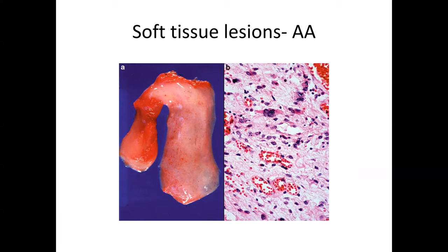Aggressive angiomyxoma, described in detail regarding the vulva in another video, can also involve the vagina. It can be challenging because it may have a very superficial component but extend very deeply into the pelvic tissues, originating near or in the vagina and extending to involve pelvic tissues elsewhere.